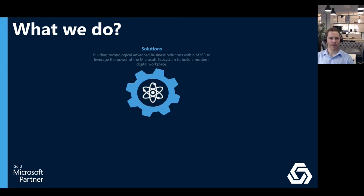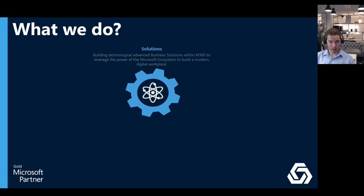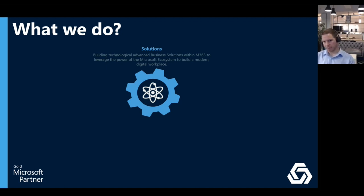What we do is broken down into four key areas. First, Solutions — building technology and business solutions using the Microsoft 365 ecosystem: Power Platform, SharePoint, Power Automate, Teams, Power BI. These range from ideas portals, demand request systems, corporate risk and lessons capture tools, project management systems, grant management systems, and desk booking systems. We take the Microsoft 365 platform and Power Platform and build business solutions in an agile delivery approach.